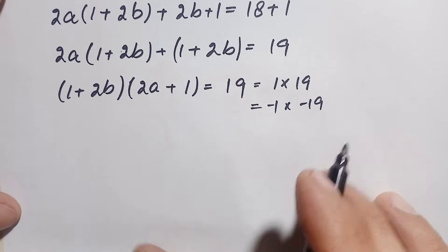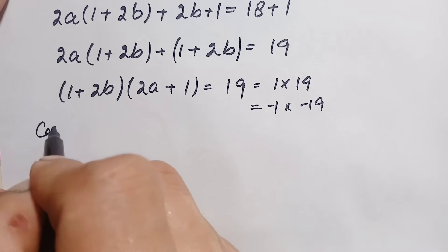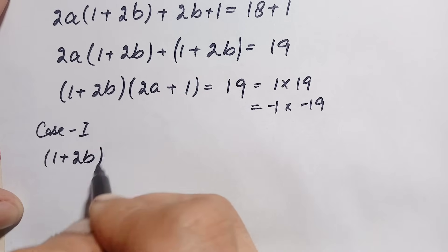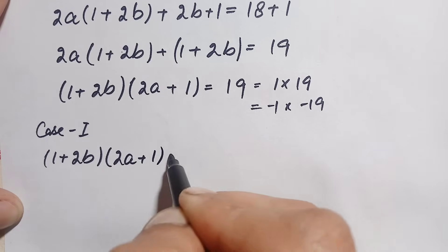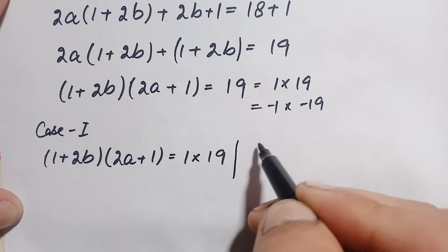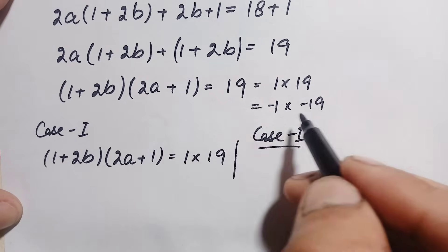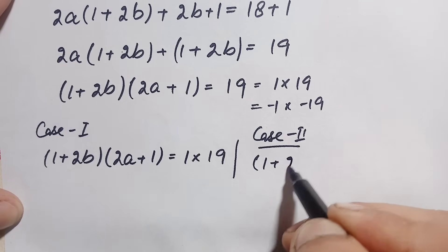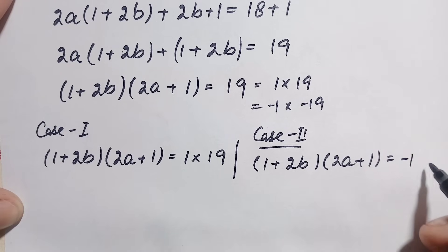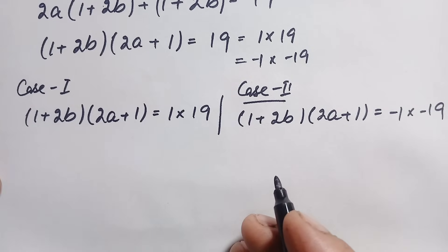We have two possible cases to compare the left hand side with the right hand side. Case 1: (1 + 2b)(2a + 1) = 1 × 19. Case 2: (1 + 2b)(2a + 1) = (−1) × (−19). Now we will solve these two possible cases for the values of a and b.